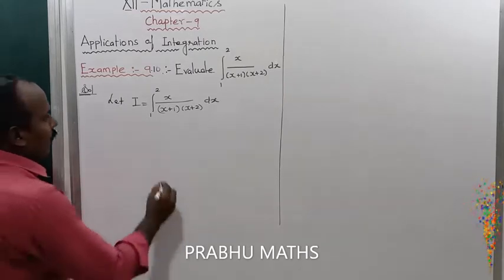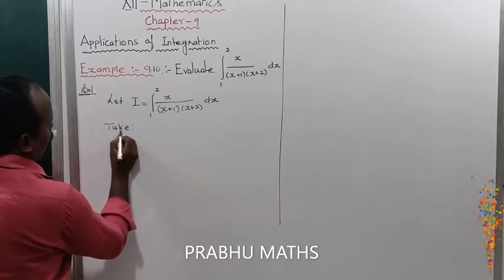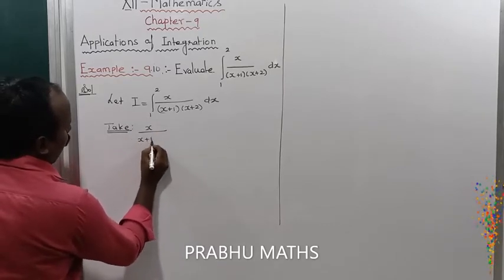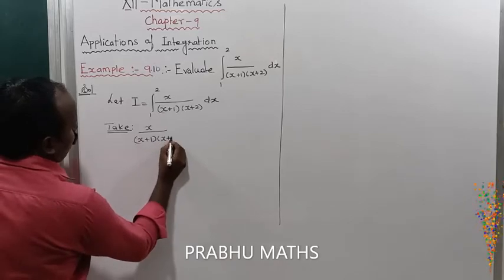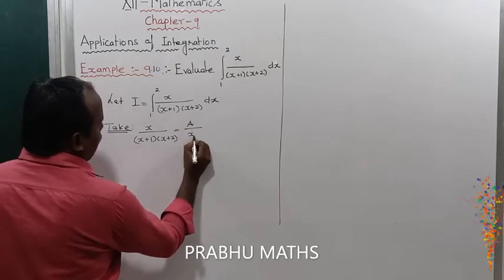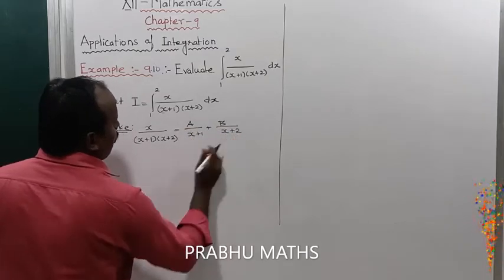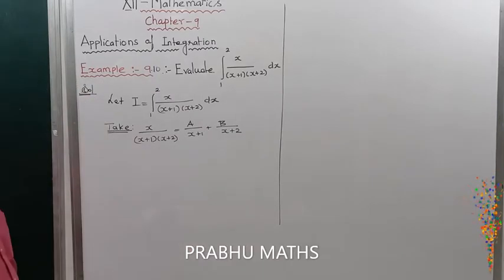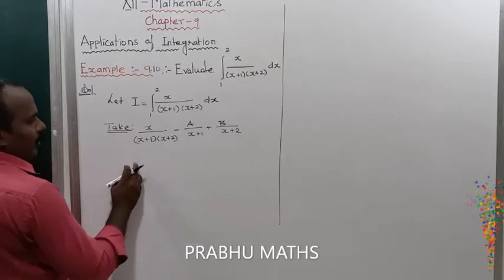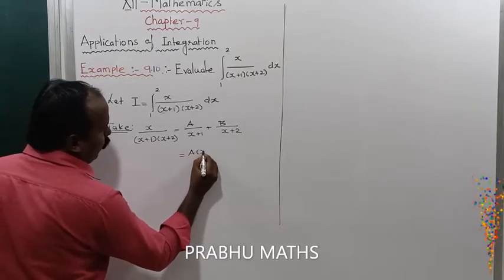Now considering f(x), let us take the f(x) values compared to the partial fraction. So x divided by (x+1)(x+2) equals A/(x+1) plus B/(x+2). That is the partial fraction value. We studied this already in 11th standard, second chapter.